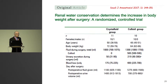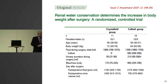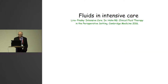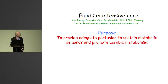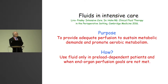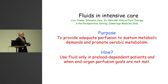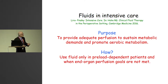Colloids seem to have a prolonged effect and it would be difficult to get rid of this by just providing diuretics. Turning to some clinical views: what is the purpose of giving fluids in intensive care? As Michael Pinsky from Pittsburgh has said, we want adequate perfusion — solely focused on this. How to do this? We use fluids only in preload-dependent patients, meaning if we expand the plasma volume by adding fluid, the heart must be able to pump a little more. And when end-organ perfusion goals are not met, we should detect an end-organ perfusion failure or evidence that perfusion is not optimal.